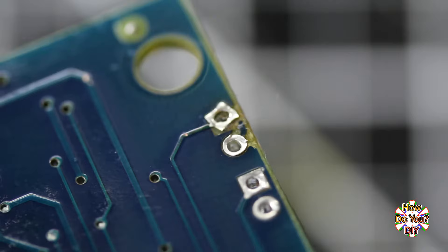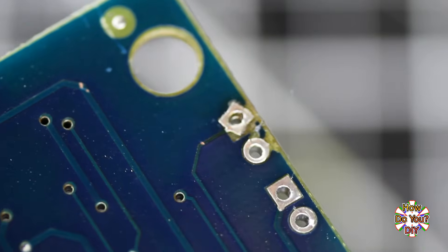If the copper pad does come off, you can still replace the part, but you will need to compensate for the missing copper pad.